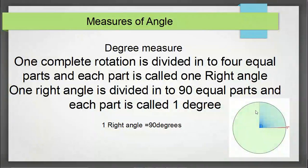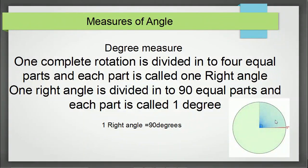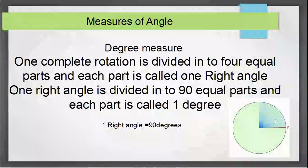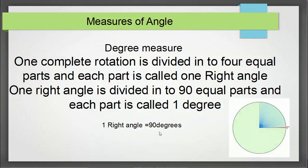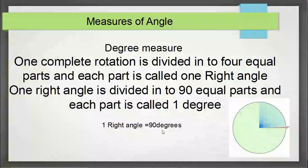Now if one right angle is divided into 100 equal parts, each part is called a grade, which is another unit of measure of angle. The degree is represented by a small letter 'o' as a superscript — for example, 90°. Similarly, grades are denoted by a small letter 'g' as a superscript.